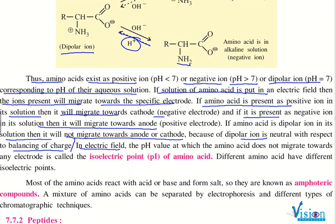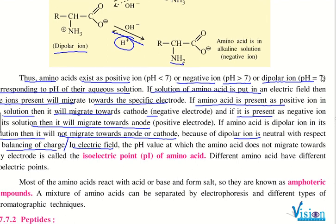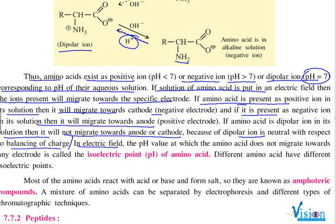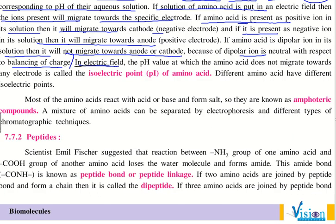In an electric field, every amino acid has a certain pH at which it does not migrate. Different amino acids require different pH values. The pH value at which an amino acid does not migrate towards any electrode is called the isoelectric point (pI) of the amino acid.